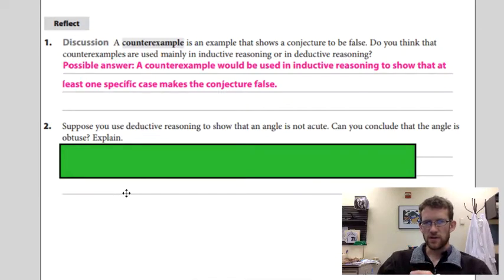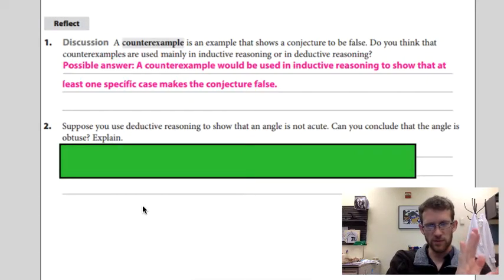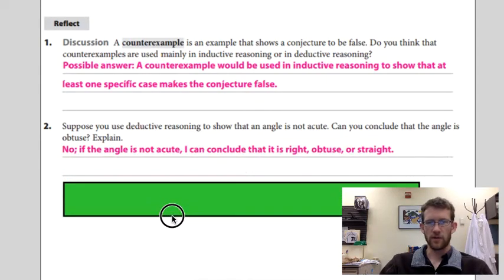Suppose you use deductive reasoning to show that an angle is not acute. Can you conclude that the angle is obtuse? No, there are other options, right? It could be a right angle.